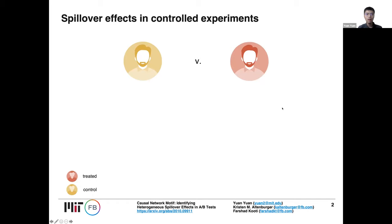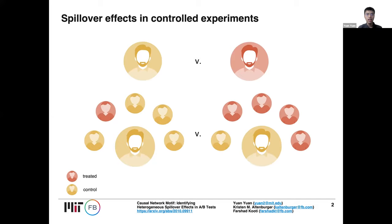When we talk about A-B testing or controlled experiments, we may first think about the comparison between the treatment and control group. However, what makes the situation complicated is when there is a spillover effect. It means that the treatment assignments of the neighbors or any other people in the world may influence the outcome of the ego node. Say the treatment is the encouragement of getting a flu shot — then given the ego node is non-treated, the fraction of neighbors who are being treated may actually influence the outcome of the ego node.